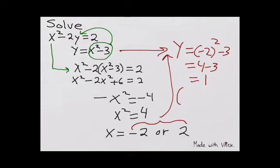So that tells me that the ordered pair (negative 2, 1) is one of the solutions. If I do the same thing with the other value of x, that is 2, I'll end up with the second solution, which is y equals 1. So those are my two solutions to this system of nonlinear equations in two variables.